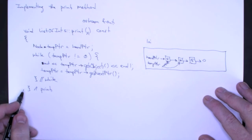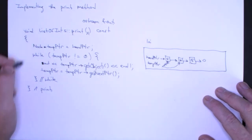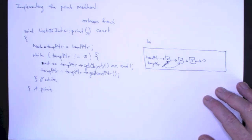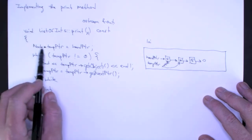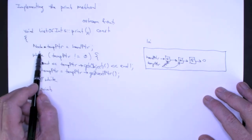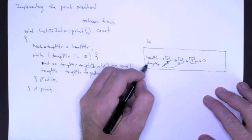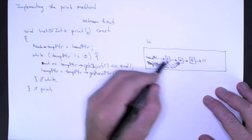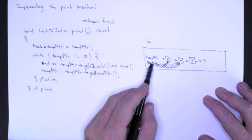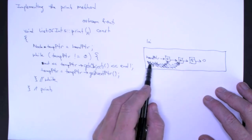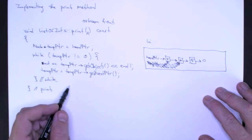An important point here is when this method terminates, what is deallocated? Only the local variables. So only temp pointer is deallocated. Temp pointer goes away and it leaves the list that head pointer points to intact.